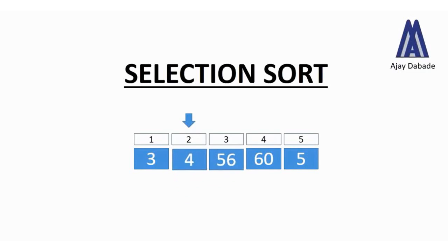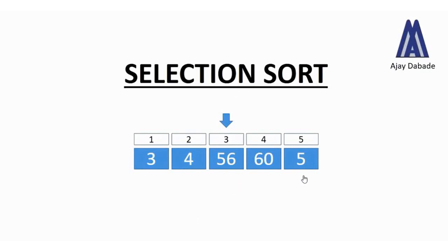Again after swapping, we move to the next pointer — position 3. At position 3 we have number 56, and from position 3 to position 5 we try to find the smallest number. The smallest number is 5, so we swap number 5 with number 56. Positions 3 and 5 get swapped.